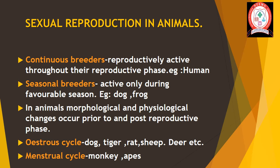Now, sexual reproduction in animals. Some animals remain reproductively active throughout the reproductive phase — such animals are called continuous breeders. For example, humans. On the other hand, some animals become reproductively active only during a favorable season — these are called seasonal breeders. For example, dog and frog.